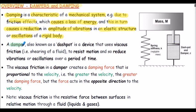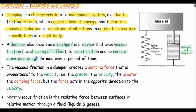A damper, also known as a dashpot, diagrammatically shown here in the sketch, is a device that uses viscous friction — that's friction generated due to shearing of a fluid — to resist motion. And this then reduces vibrations or oscillations over a period of time.